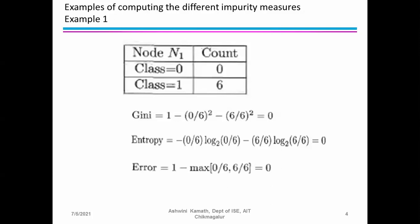The misclassification error = 1 − max(0/6, 6/6). The values are 0 and 1, so the maximum is 1. Therefore, 1 − 1 = 0. For all three impurity measures applied to node N1, we are getting the answer as 0.